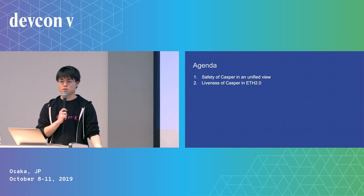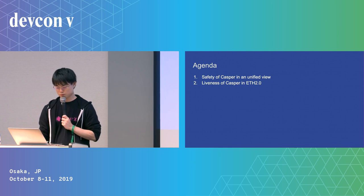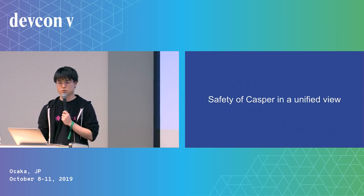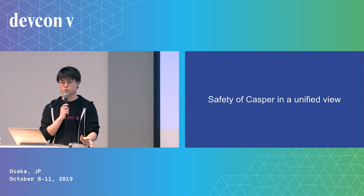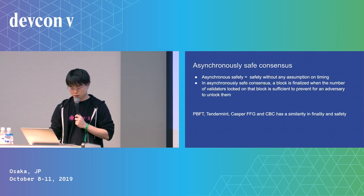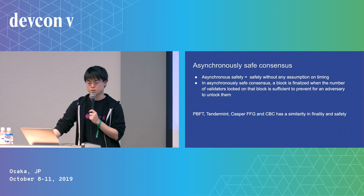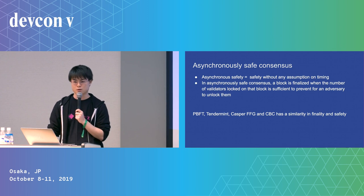Casper, or any consensus protocol, has two properties: safety and liveness. The talk is divided into two parts: a safety part and a liveness part. PBFT, Tendermint, Casper FFG, and CBC are all categorized as synchronously safe consensus protocols, meaning safety does not require any timing assumptions.